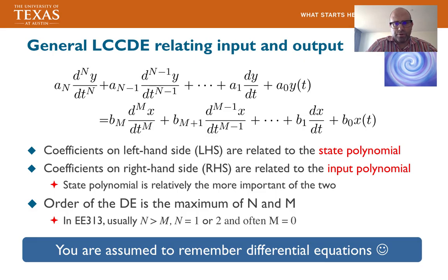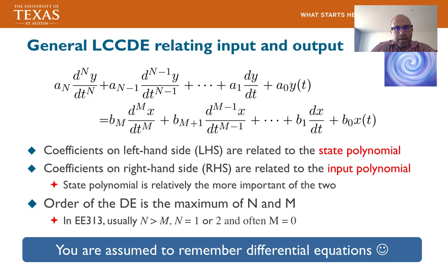The order of the differential equation is the maximum of n and m — the highest order of derivative. In ECE 313, most examples have n equal to 1 or 2, and typically m equals 0, but sometimes m can be 1 or 2 as well. I'm assuming you've had differential equations, so I'm not teaching that from first principles.